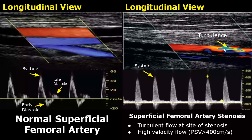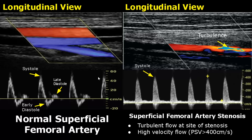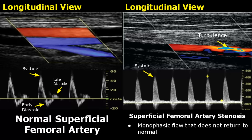In this case, we see severe stenosis of the superficial femoral artery. Turbulent flow is noted at the site of stenosis. We can see mixing of colors here. The PSV is very high — it has crossed 400 centimeters per second, much higher than the normal PSV of approximately 60 centimeters per second. This indicates severe stenosis. A monophasic waveform is seen here; we only see a systolic peak.